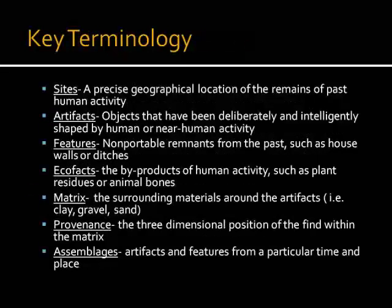When we're thinking about archaeology, one of the key things is to have essential terms and be able to understand what these terms mean when reading any sort of archaeological account. Archaeologists generally work with sites — a precise place where you have the remains of past human activity. These remains can take a number of different forms, including artifacts, features, and ecofacts, which can all be situated within a matrix, provenience, and an assemblage.